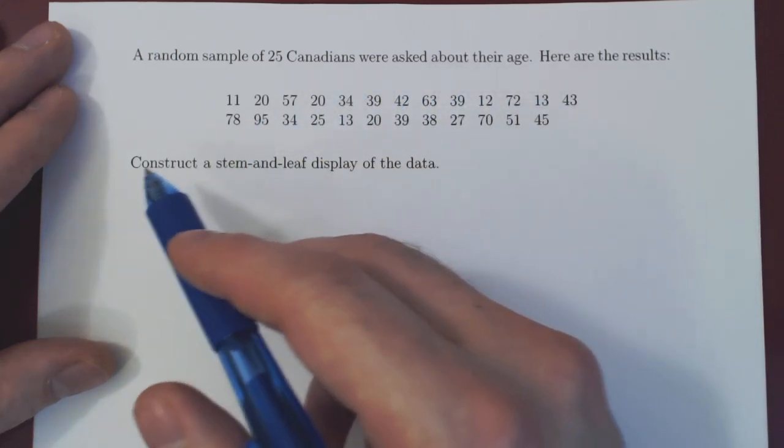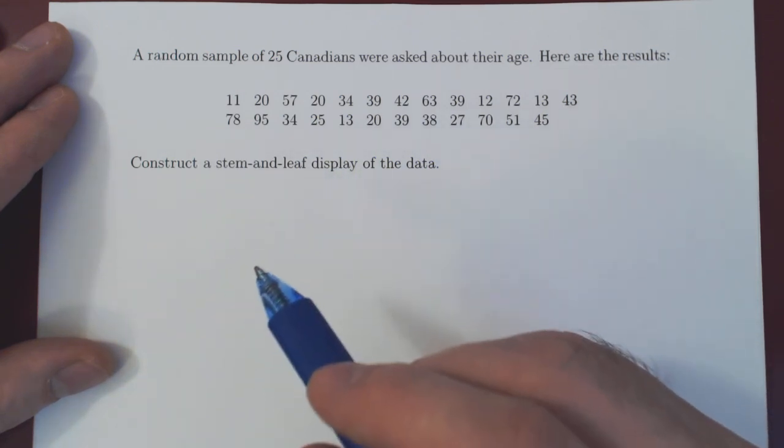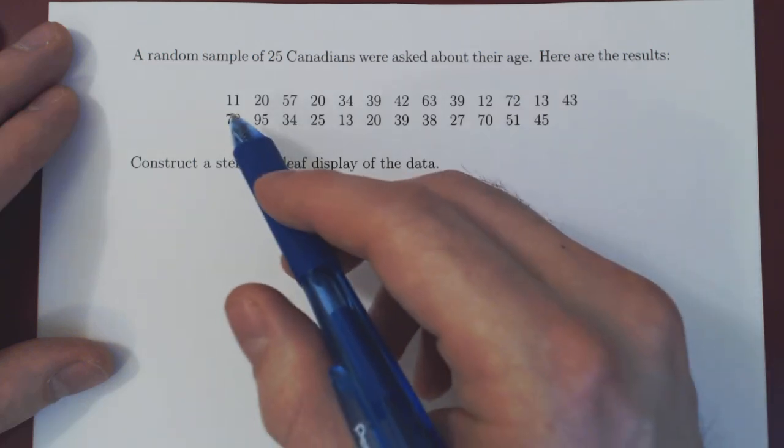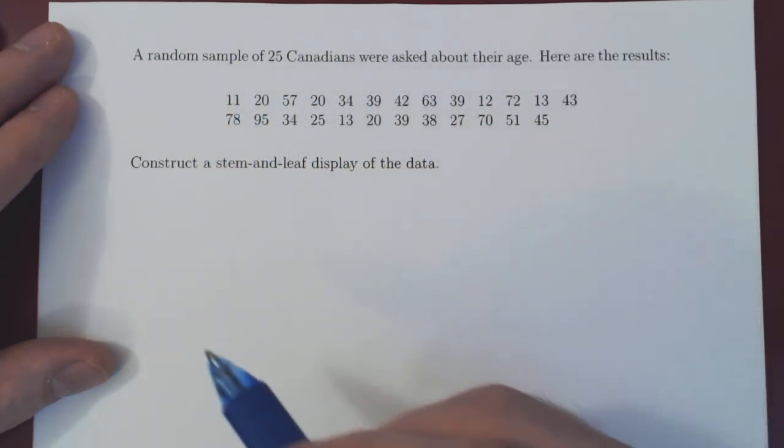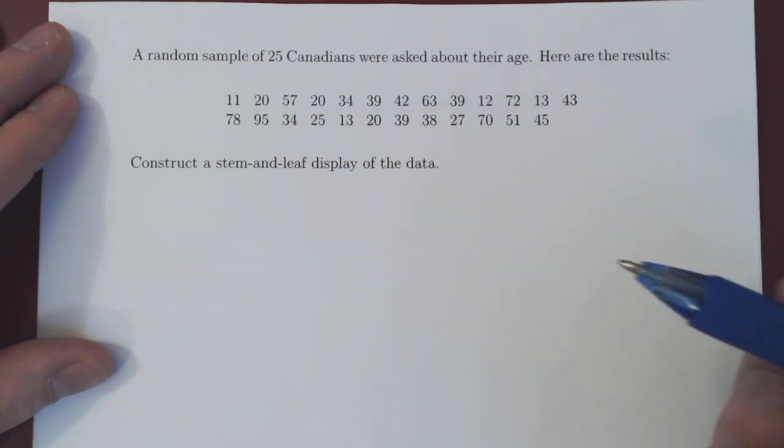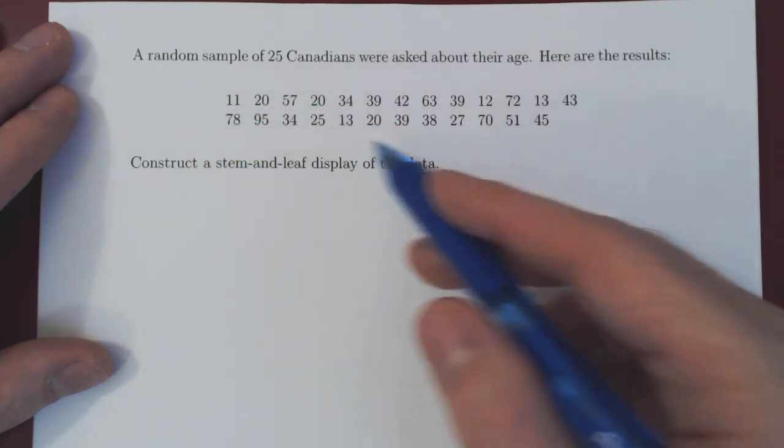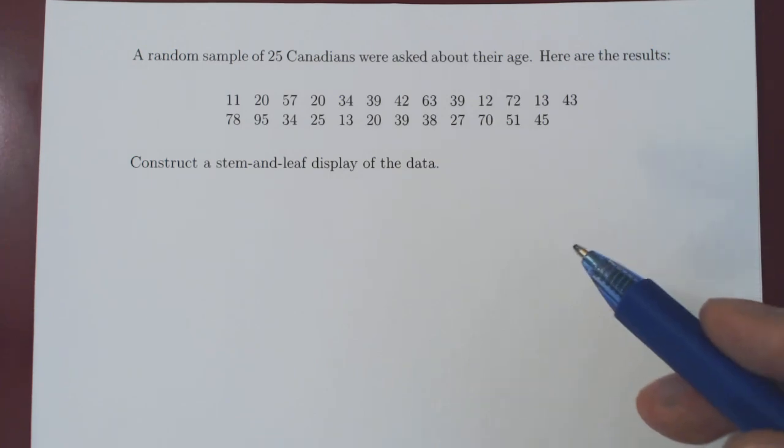You may ask, first, what is this stem and leaf display? That is, once again, just like the bar graph, a graphical representation of the raw data. And you may ask, well, why would we need possibly a second way to represent this data graphically? Isn't the bar graph enough?